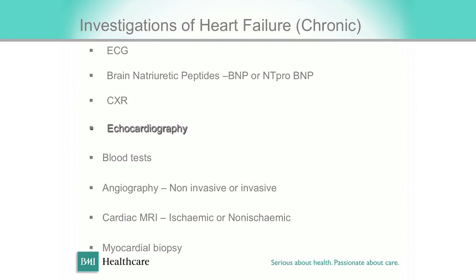So what is the best investigation for heart failure? ECG. If the ECG is normal, it is extremely unlikely that the patient has heart failure. You can do a blood test for heart failure — either BNP or NT-proBNP. If it is raised, it is highly suggestive of heart failure. The chest X-ray can be normal in 50% of patients. But if you do all three and all three are normal, the patient hasn't got heart failure. If any one of them is abnormal, then you proceed with an echocardiography.